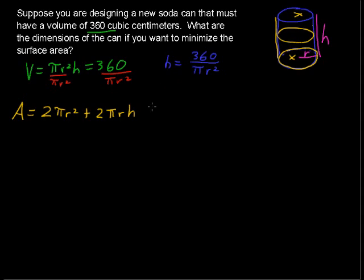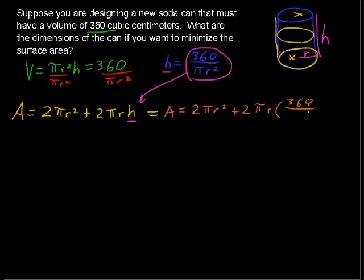All right, now we're going to take this h and plug it in. This h goes in for this h, or this quantity goes in for this h. So I'm just going to keep writing that right over here. I'll change colors so we don't mix those up. And I'll say the area equals 2 pi r squared plus 2 pi r times 360 over pi r squared.